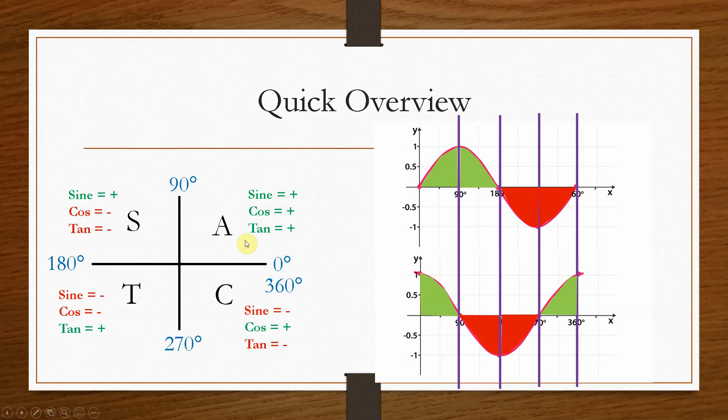So that is where these values basically come from. Now, when you solve these questions, a lot of the time, they might ask you to rank values in order of their size. Now, you can use a CAST diagram, but the easiest way to do it is to use the sine and the cosine graphs. And that will help you visualize it that little bit more.